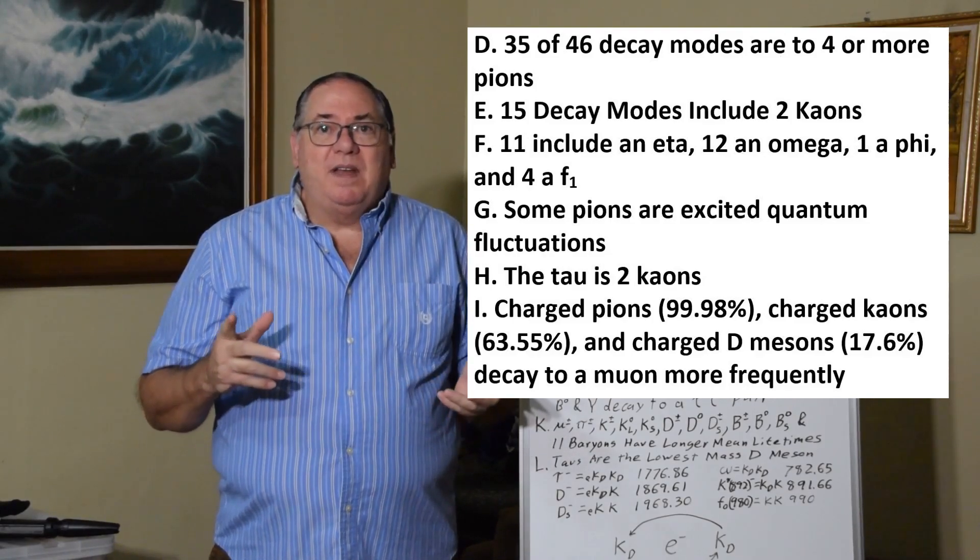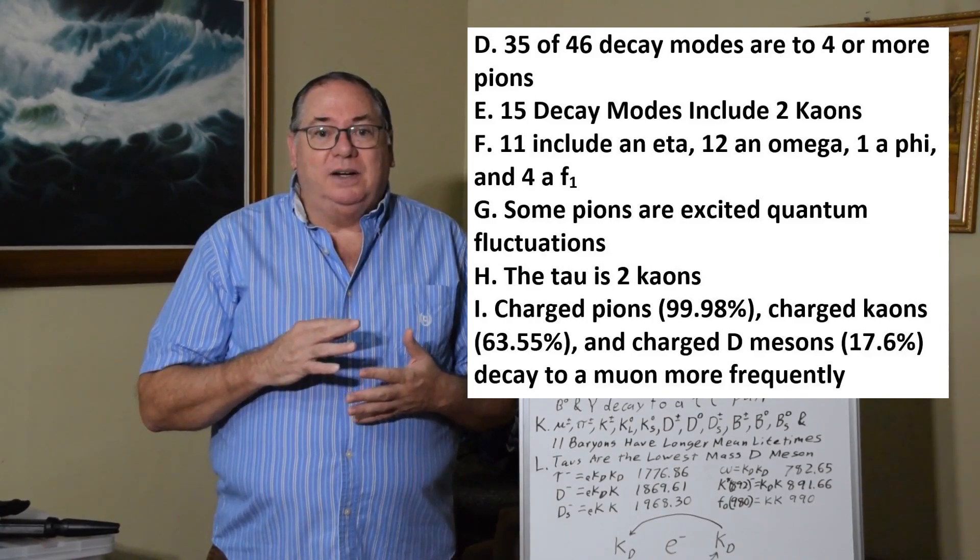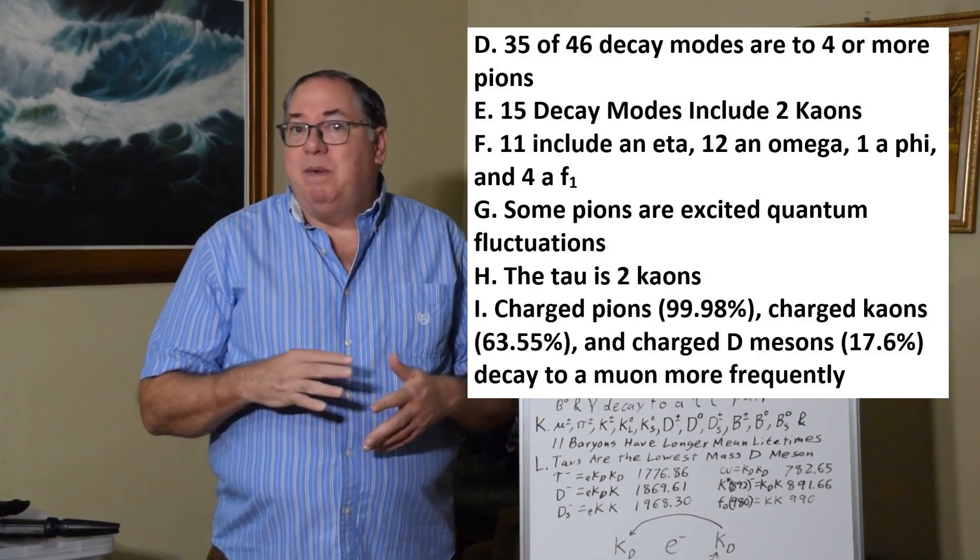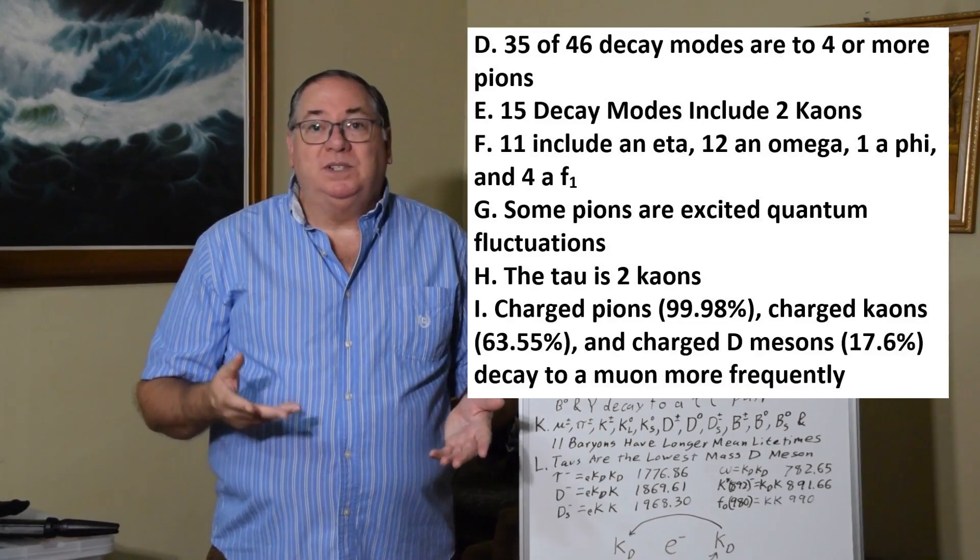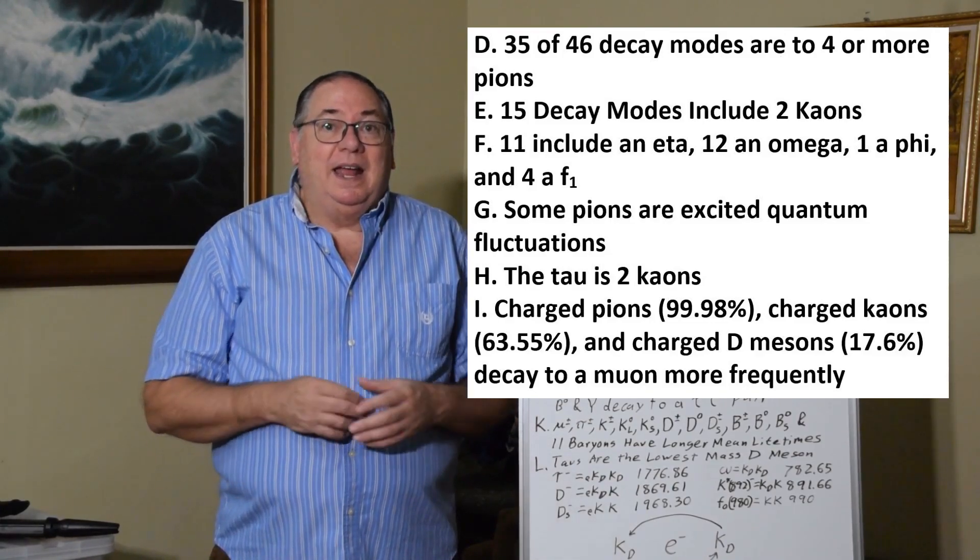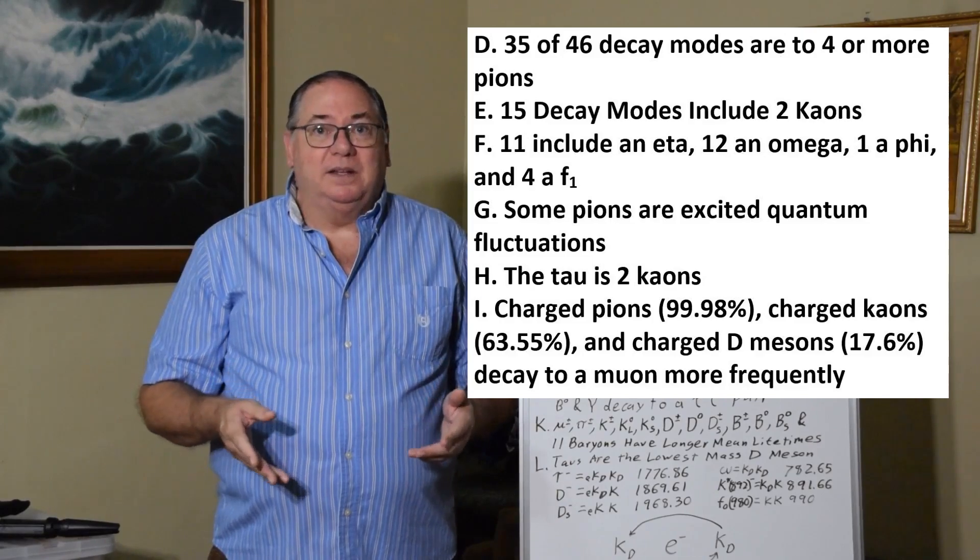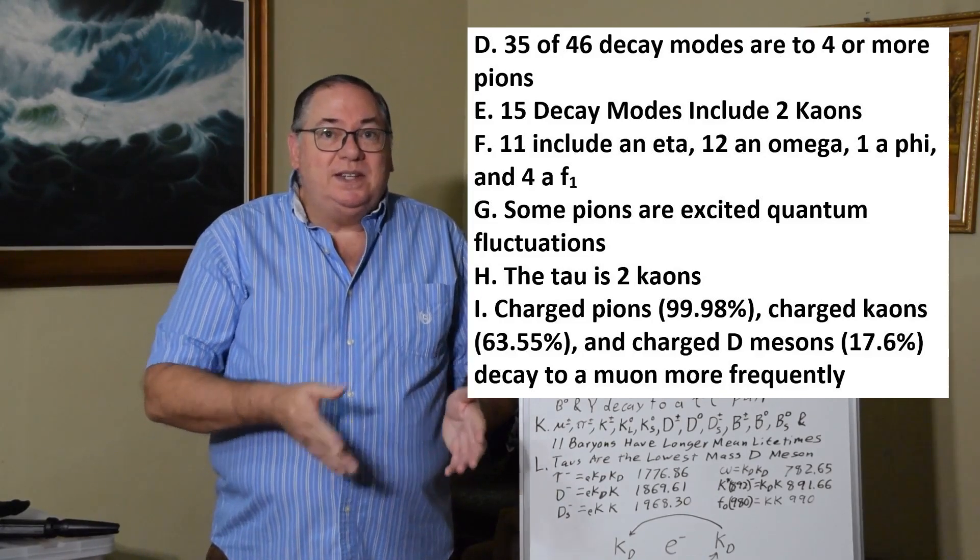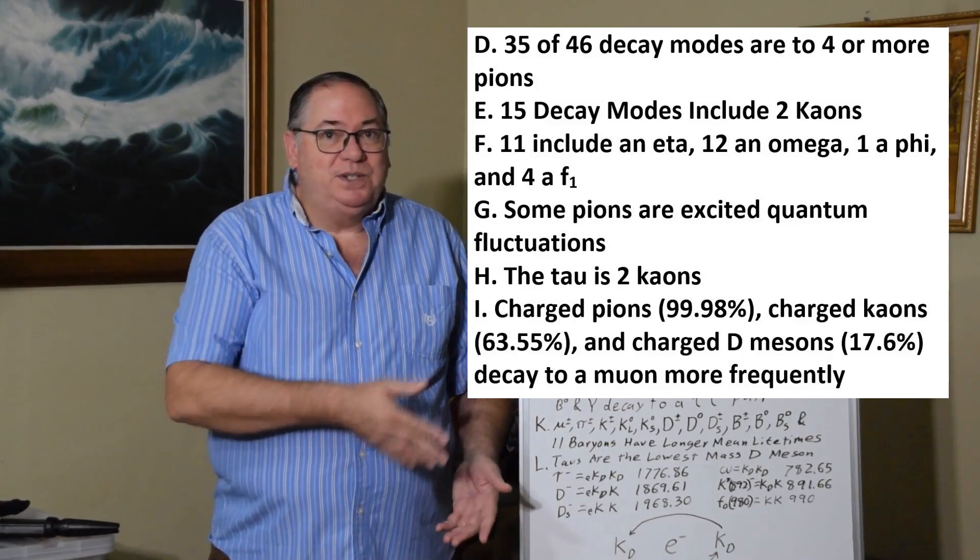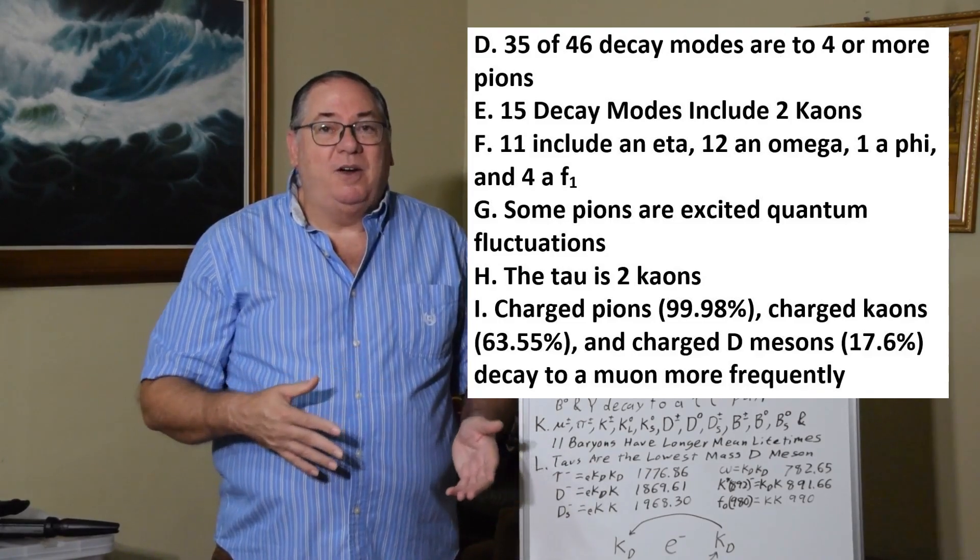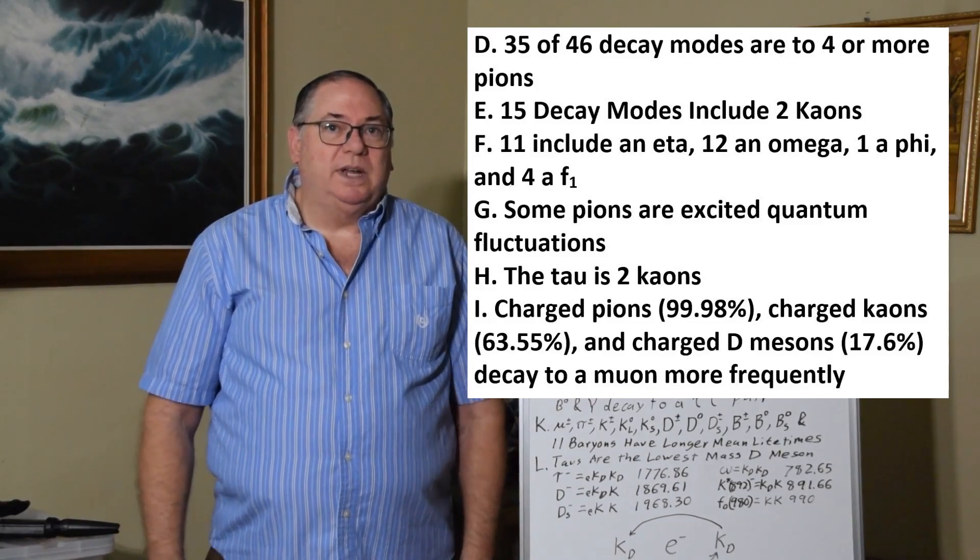So we have 11 decays include an eta, and an eta decays to 3 pions. There are 12 decays to an omega, and omega decays to 4 pions. There's 1 decay to a phi, which decays to 5 pions. And then there's 4 decays to an F1. And F1's decay to 4 or 5 pions, generally. And an F1 doesn't even fit the standard model. So, why are tau's decaying to F1's, which aren't elementary particles and aren't even standard mesons that fit the standard table of quark-type mesons?